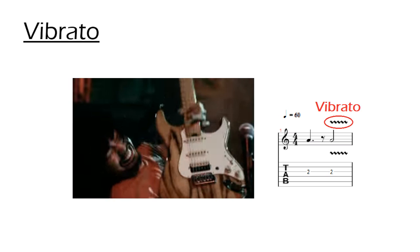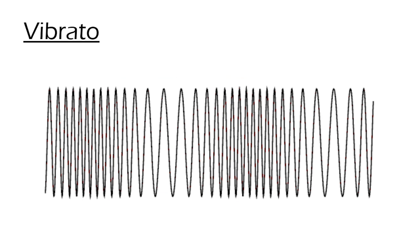The name vibrato does not refer to the vibration of the wave itself, but rather the vibration of its frequency, that is, a slight and quick variation of pitch. A sine wave with vibrato would look like this, where it is seen that its frequency increases and decreases repeatedly, which causes the slight variation in pitch we perceive.